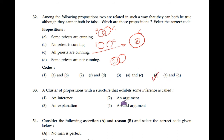Question number 33: A cluster of propositions with a structure that exhibits some inference is called an argument. Correct option is 2.